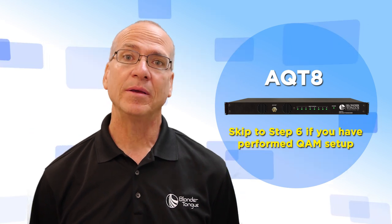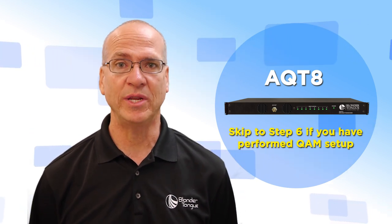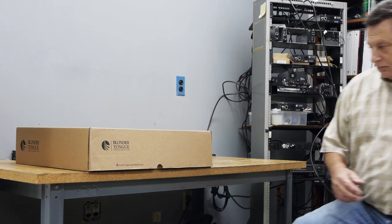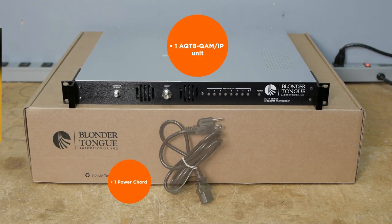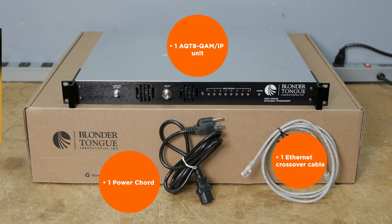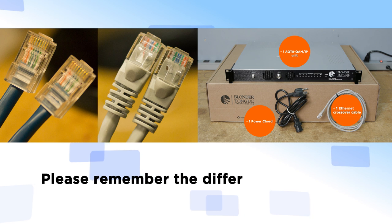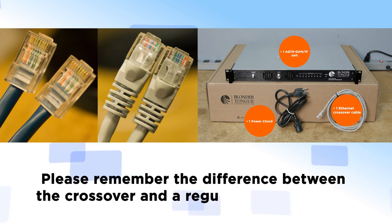Before we get started, be certain you have everything you need to set up. In the package we provided, you'll find one AQT8 QAM IP, one power cord, and one Ethernet crossover cable. Please remember the difference between the crossover and a regular Ethernet cable.